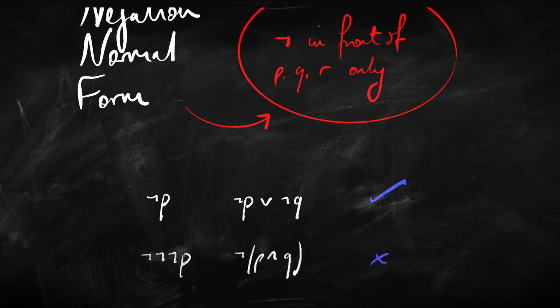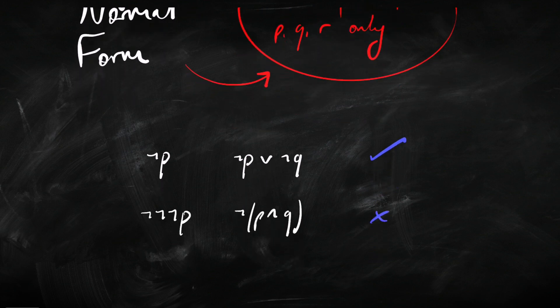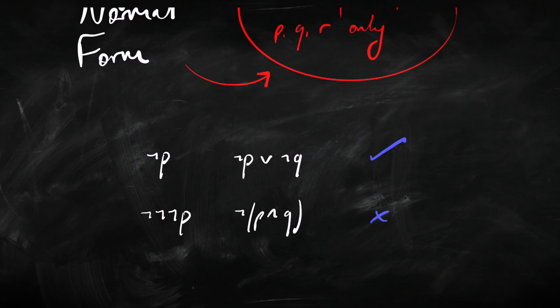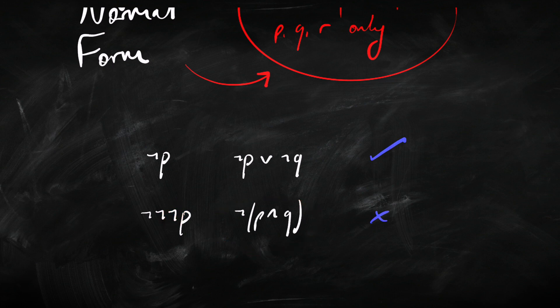But these two aren't in negation normal form. This one isn't in negation normal form because these two negations here are not immediately in front of the P — this one gets in the way, as it were. And this sentence isn't in negation normal form because this negation here is not immediately in front of the P.